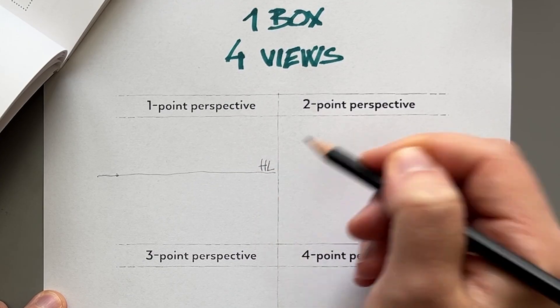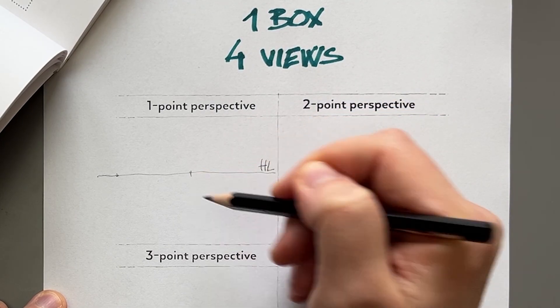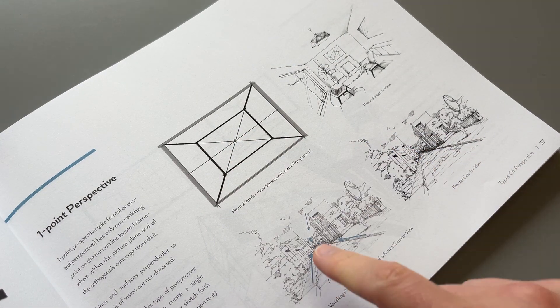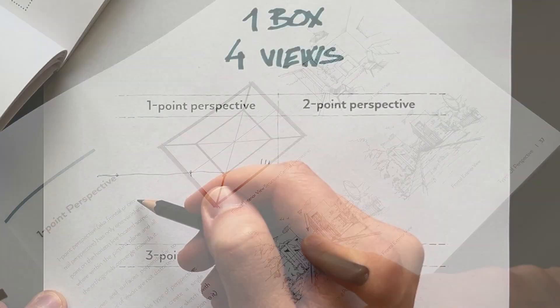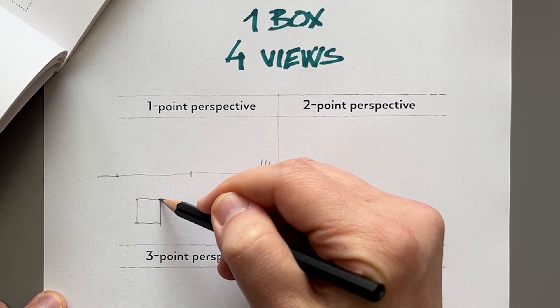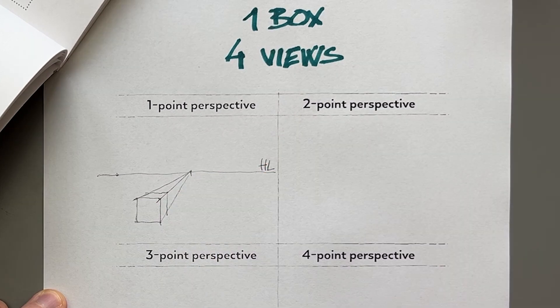I'm going to need my horizon line, which is just an imaginary horizontal line, and just one vanishing point. To draw a box, I can draw a square pretty much anywhere and connect it to that vanishing point. Simple, right?